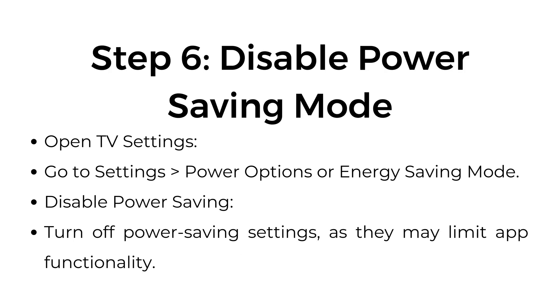Step six: disable power saving mode. Open TV settings and go to Settings > Power Options or Energy Saving Mode. Turn off power saving settings, as they may limit app functionality.